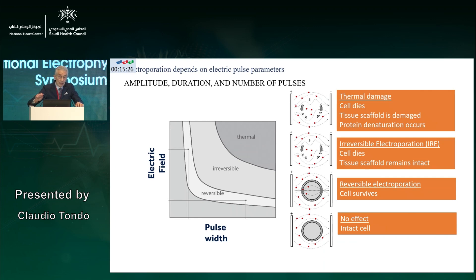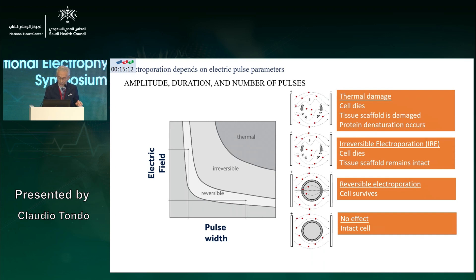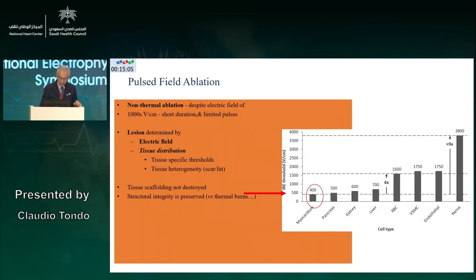If you increase the electrical field further, you go into the thermal effect, meaning not only does the cell die, but you also have denaturation of protein and the tissue scaffold is damaged. This is something we do not want in electroporation.